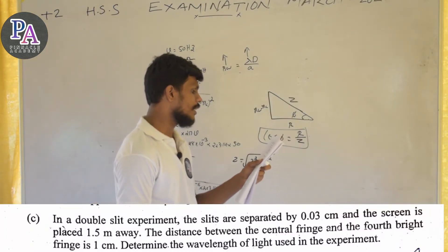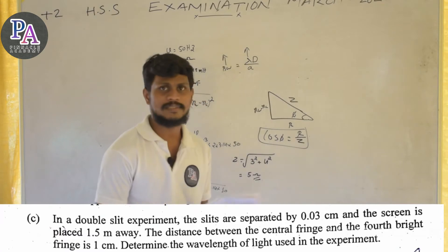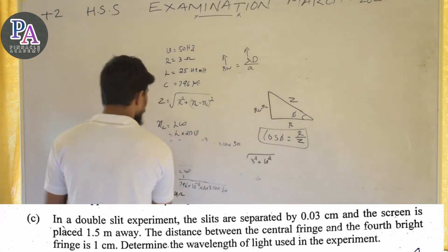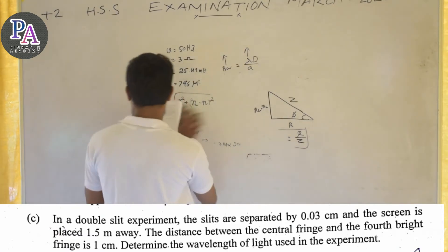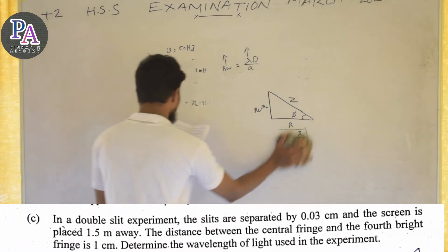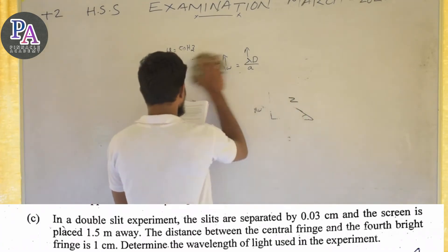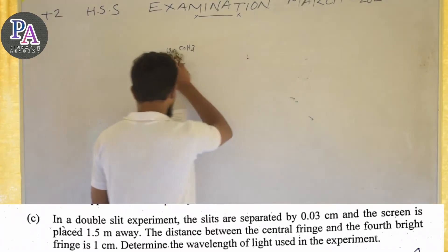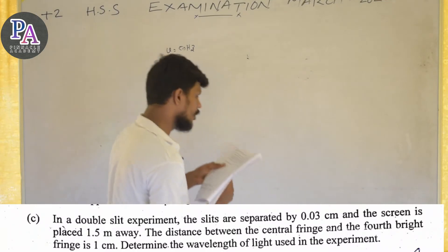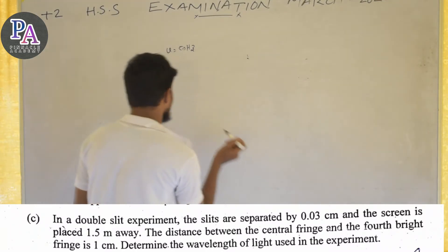Now looking at a double slit experiment. It is a double slit experiment where the slits are separated by 0.03 centimeters.